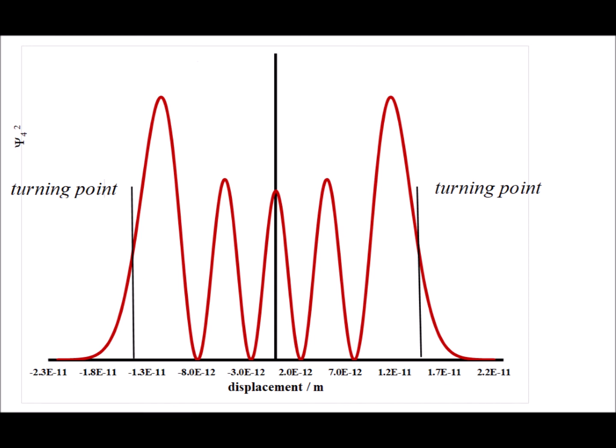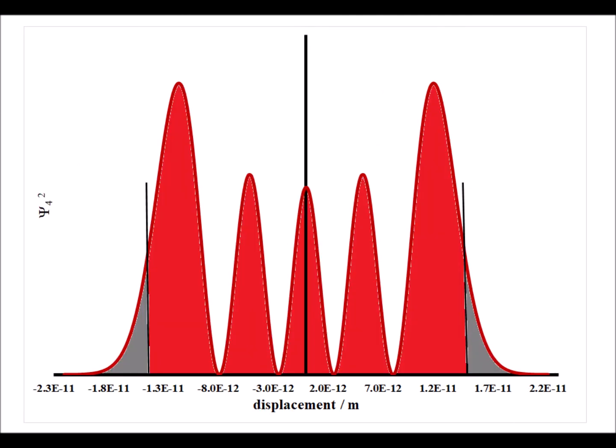Here is the fifth and final state that we're going to look at, the n equals four state. Now for the n equals four state, the forbidden regions are shown shaded in gray, and the allowed regions are shown in red.